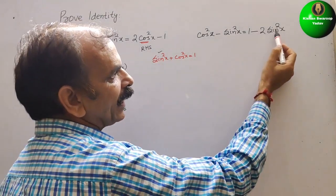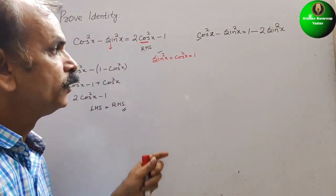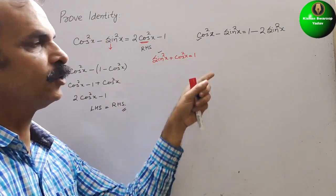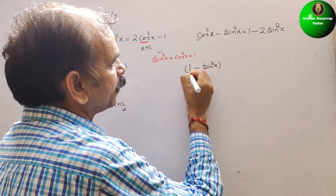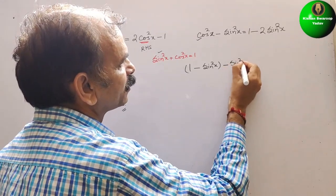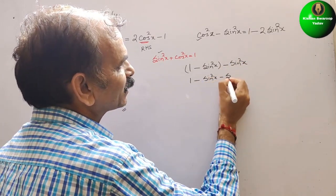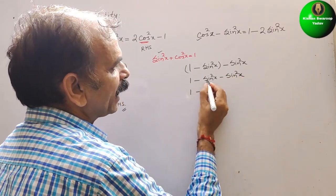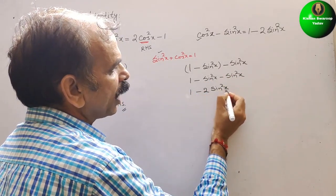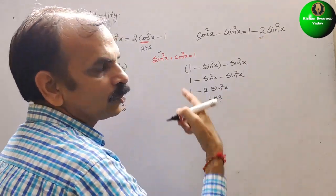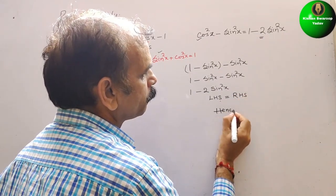Now for the second identity, the right side is in terms of sin, so we have to convert cos²x in terms of sin. We use cos²x = 1 − sin²x. Substituting: (1 − sin²x) − sin²x. Opening the bracket gives 1 − sin²x − sin²x = 1 − 2sin²x. This is the LHS, and RHS is also the same. Hence proved.